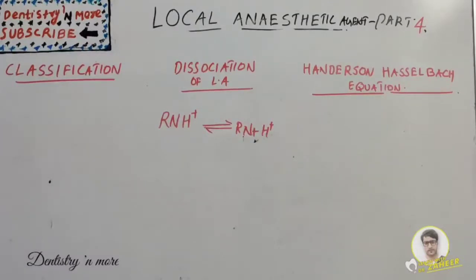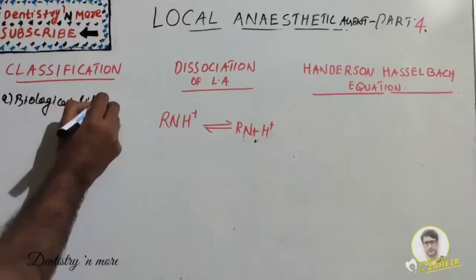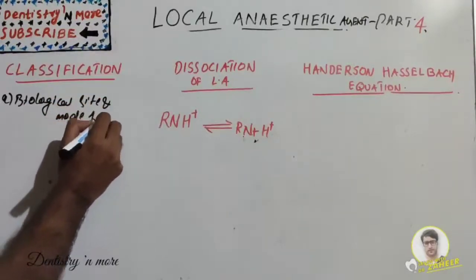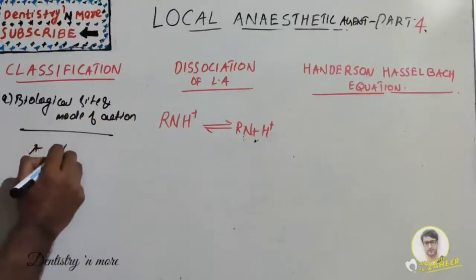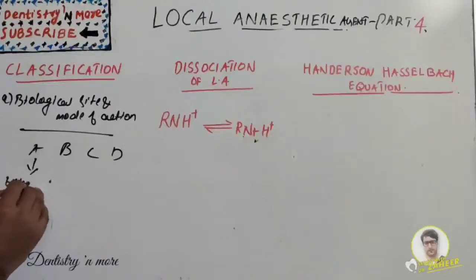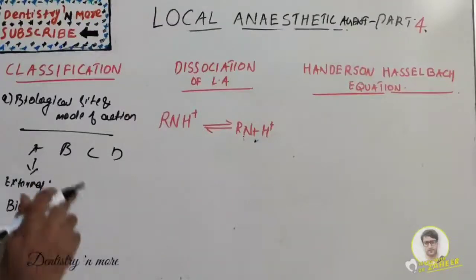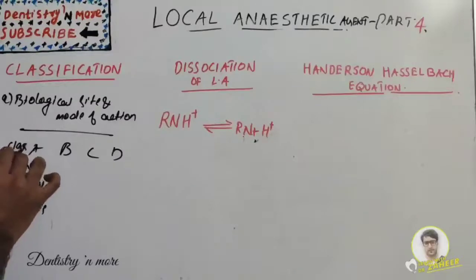Let's start with the classification. The first classification category is biological site and mode of action. In this category we have A, B, C, D. Class A: agents acting at receptor sites on the external surface of the nerve membrane. The most common example is biotoxins, which act on the external surface.